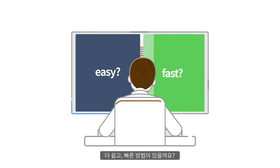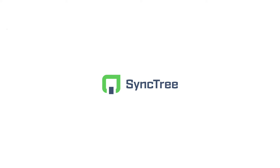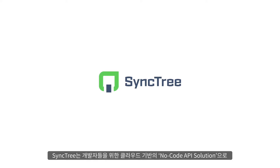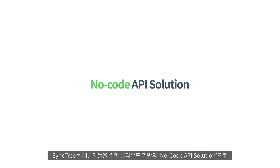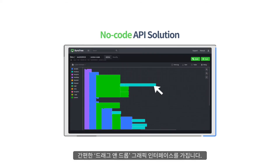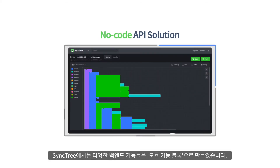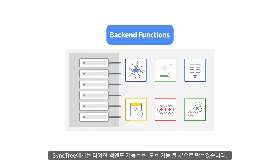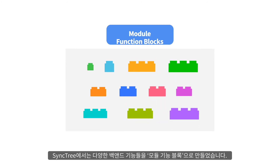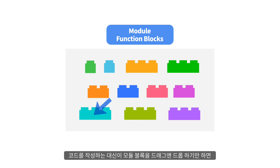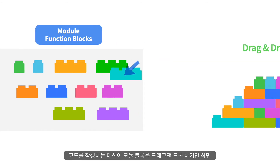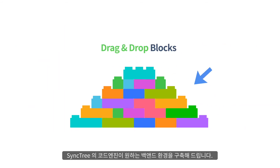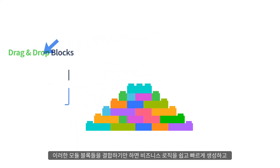Can there be an easier and faster way to do this? Yes, there is. Introducing SyncTree. SyncTree is a cloud-based, no-code API solution for developers with a simple drag-and-drop graphic interface. In SyncTree, we have made various backend functions into module function blocks. Instead of writing code, just drag and drop these module blocks, and SyncTree's code engine will build your desired backend environment for you.